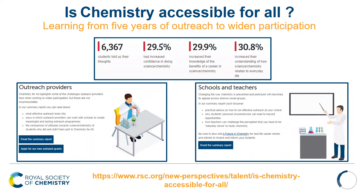We have also released our Chemistry Accessible for All report. We believe that every child should have access to high quality chemistry education, and yet there are barriers preventing many from participating. Our five-year Chemistry for All outreach study has shown that targeting students from less advantaged backgrounds can draw them into the chemistry pipeline and strengthen their identification with chemistry. The summary report includes calls to action for organisations with the power to make chemistry more accessible, as well as perspectives from outreach providers, schools and teachers on how to get the most out of effective outreach.